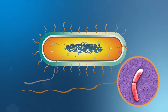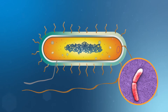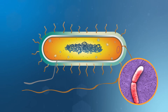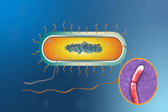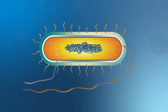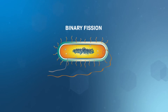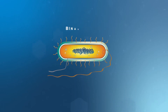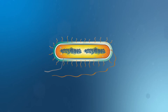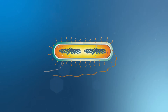Prokaryotic cells reproduce by dividing, creating two identical cells. This process is called cell division, or binary fission. During cell division, the DNA is copied and the cell grows in size to accommodate the extra DNA and cell parts.